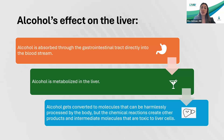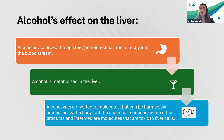What happens when alcohol is ingested? Alcohol is absorbed through the GI tract directly into the bloodstream, then metabolized by the liver. Alcohol gets converted to molecules that can be harmlessly processed by the body, but during that chemical reaction, intermediate molecules are created that are actually toxic to the liver. There are individual variations in how alcohol is metabolized, related to genetic factors, environmental factors, a patient's nutritional aspects, and the amount of alcohol consumed. Obviously, the more alcohol consumed, the more toxic metabolites produced.